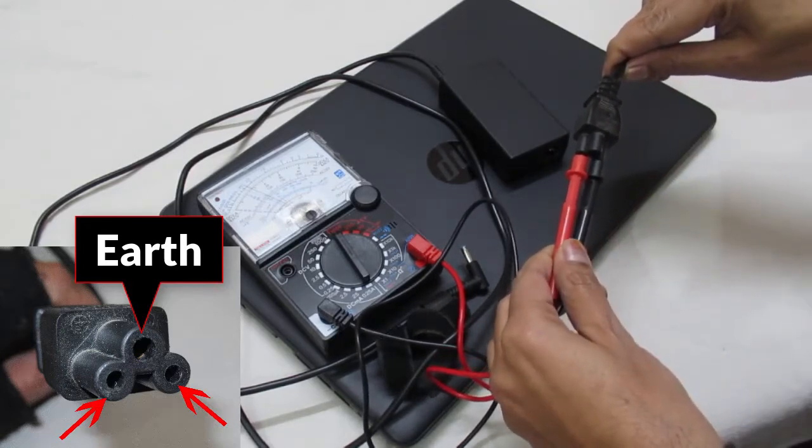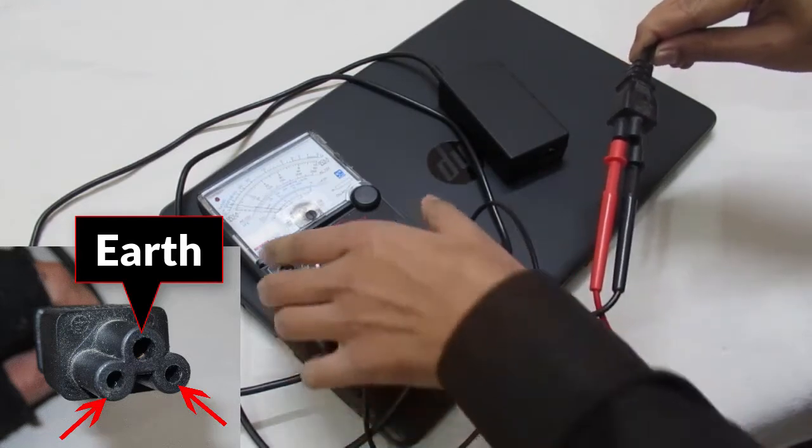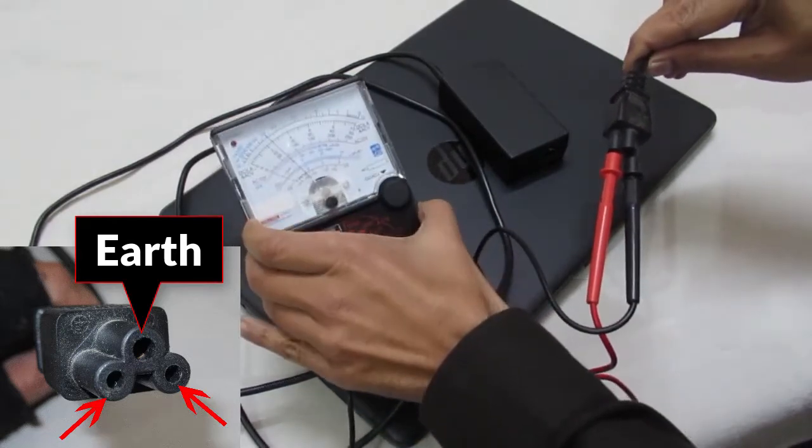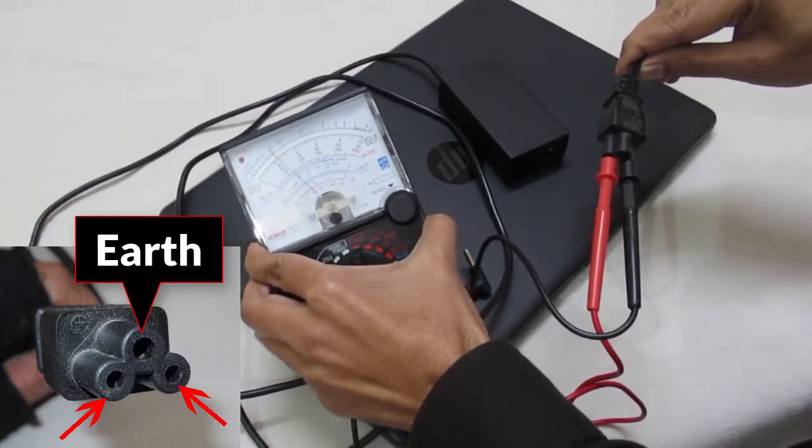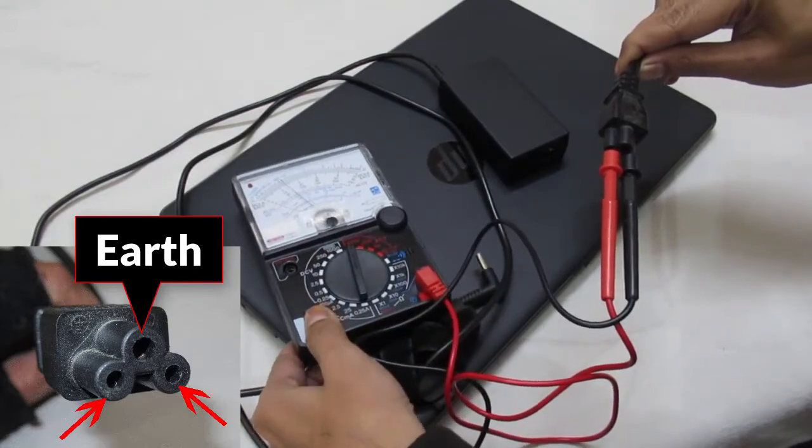The multimeter is showing approximately 220 volt AC. If this cord is not showing any flow of current, that means this cord is broken or damaged. So let's take the next step.